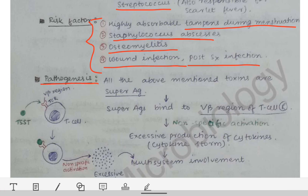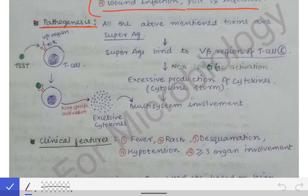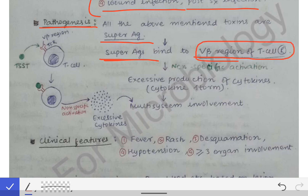The pathogenesis of toxic shock syndrome involves the toxic shock syndrome toxins — TSST1 and TSST2 — which are all superantigens. The property of superantigens is that they bind to the variable beta region of the T-cell receptor. Remember: superantigens always bind to the variable beta region of the T-cell receptor.